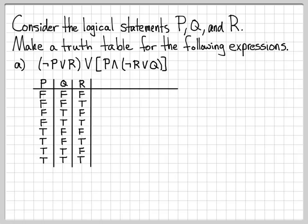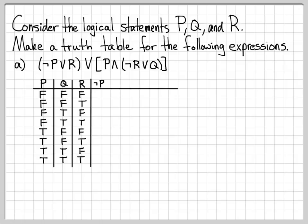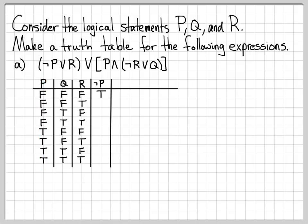Those are all possible combinations of the logical statements P, Q, and R. Now I need to start adding columns to help construct a final column for our logical expression. One of the things I'm going to need is a column for not P. All I need to do is look at the P column and negate every entry — all the falses turn to trues and all the trues turn to falses.